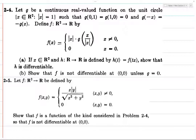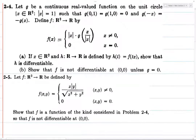If f can be written in this form, then it automatically follows by 2-4b that f is not differentiable at (0,0). You also have to prove that the function g you end up with is not the zero function, but that turns out to be not difficult in this case.